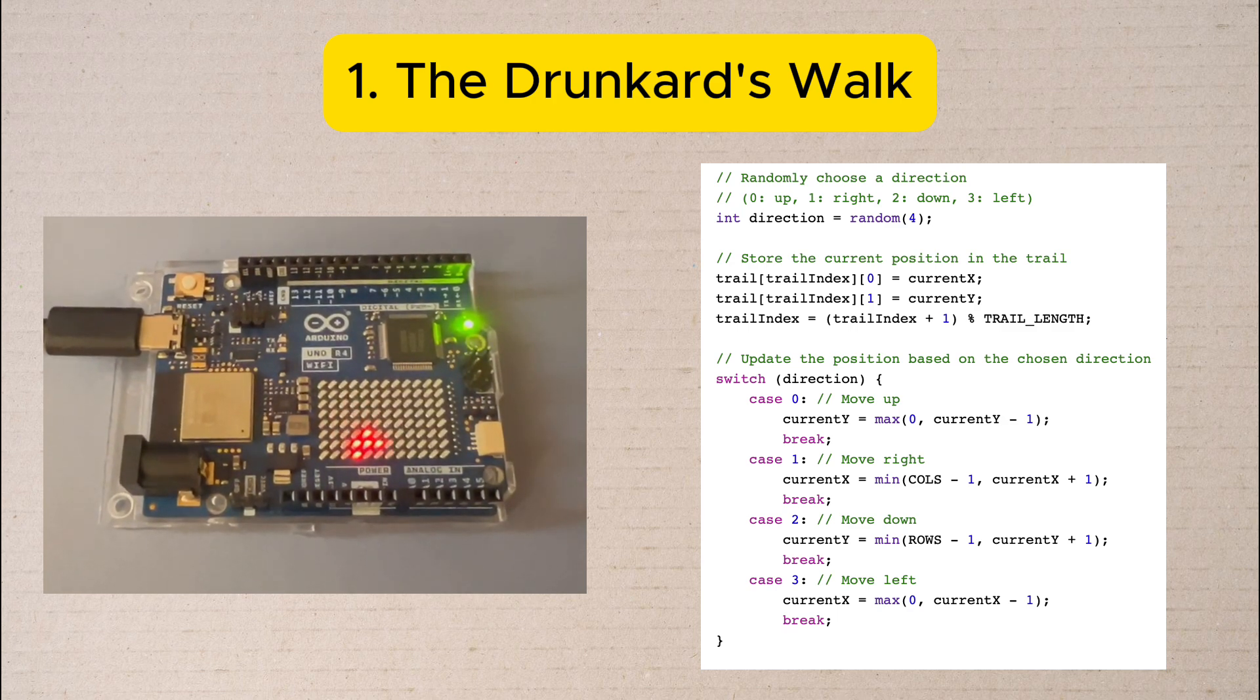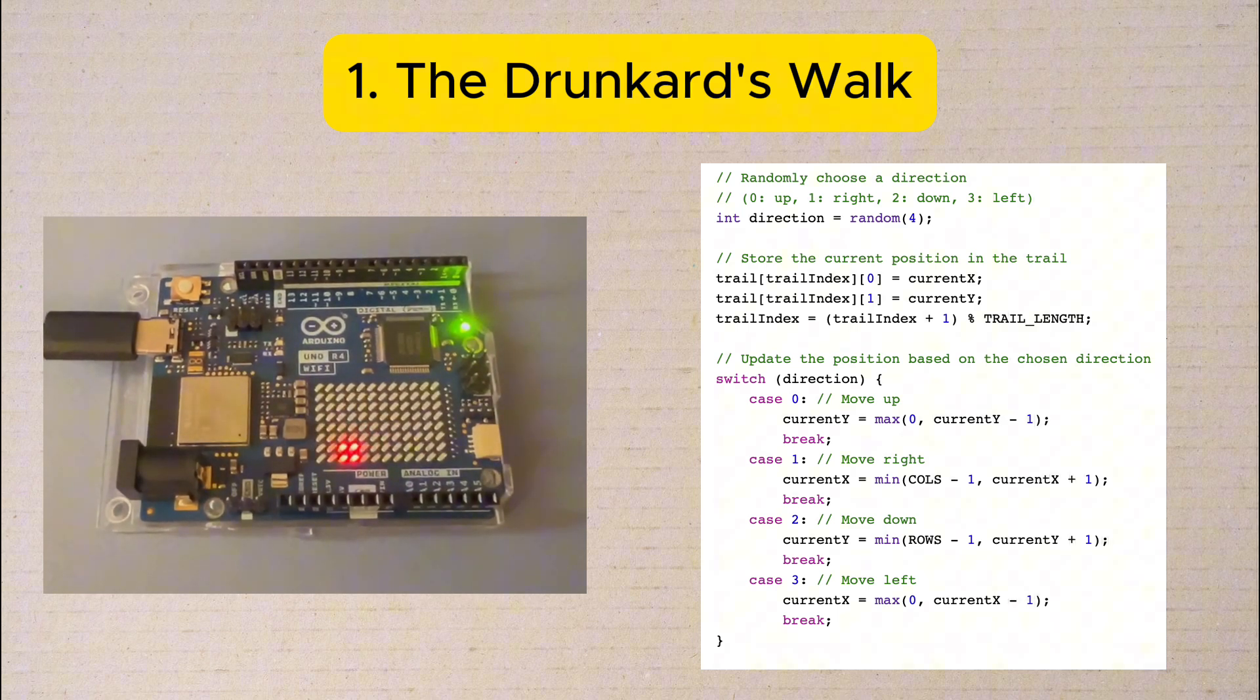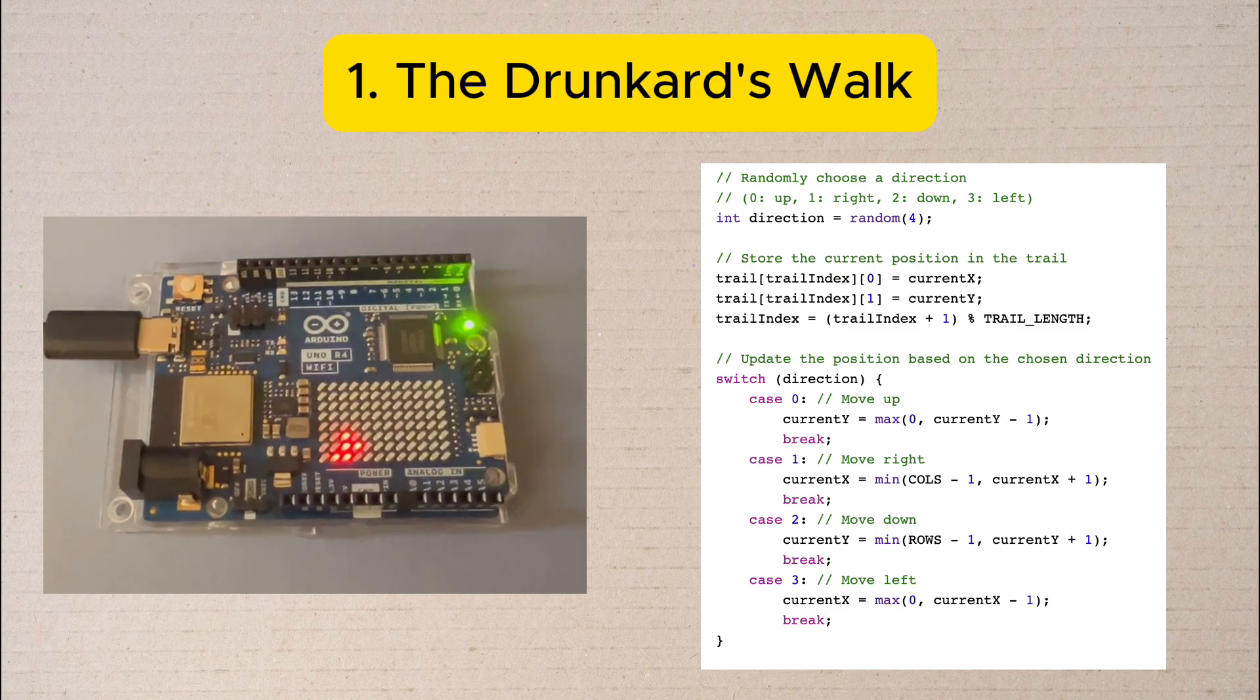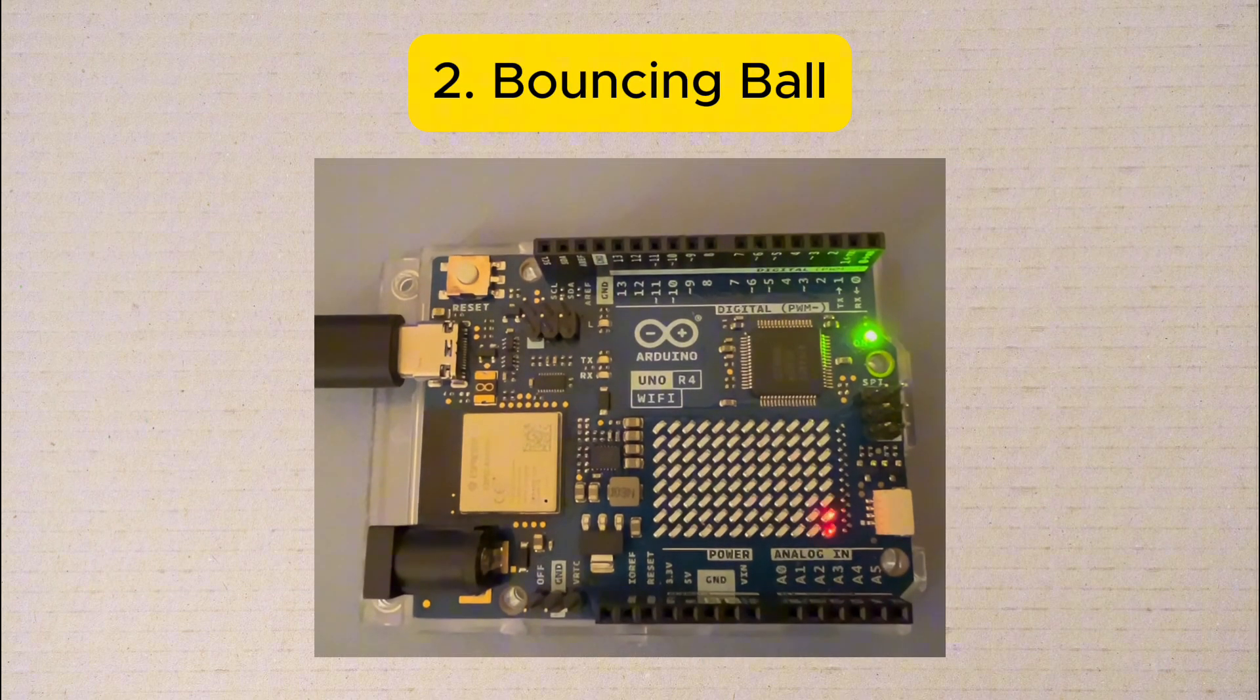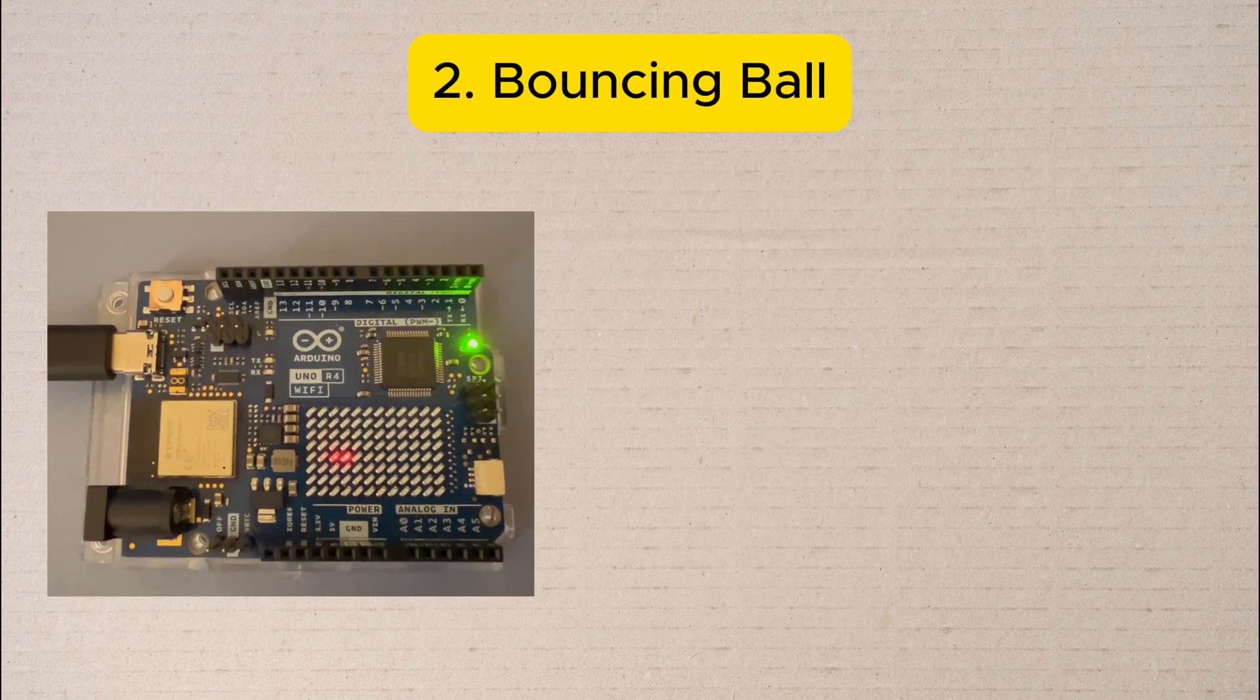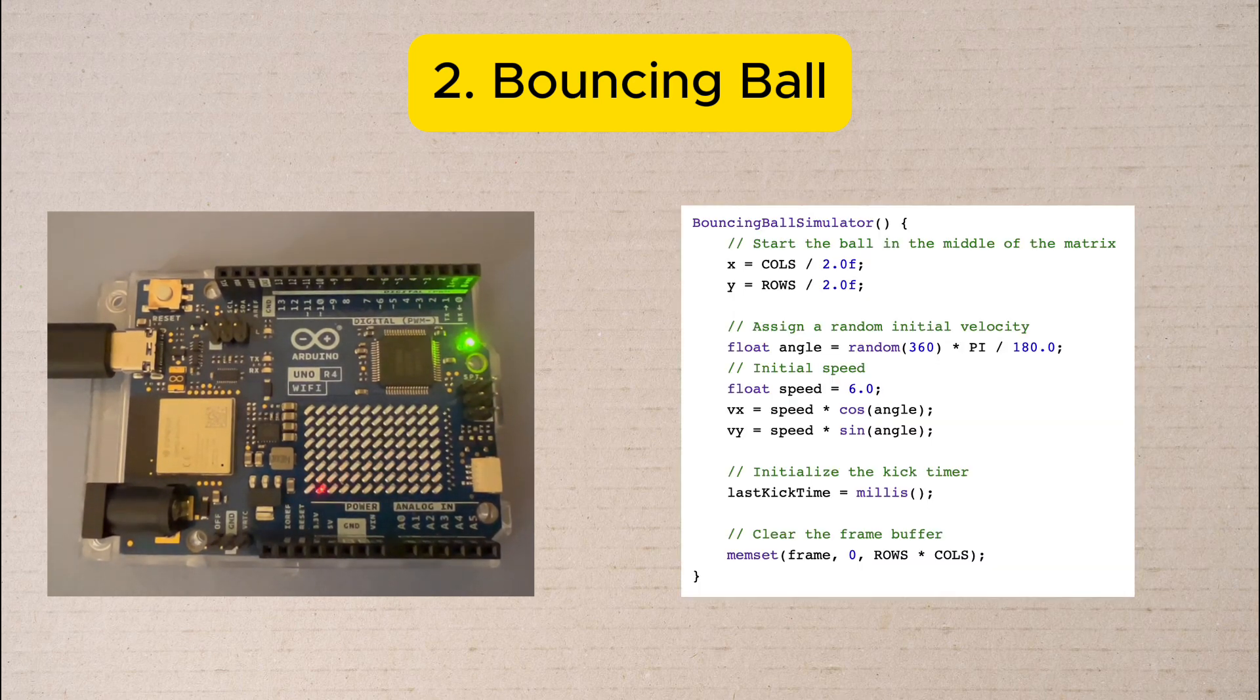The current position is always lit up while the trail shows where we've been. Number two: Bouncing Ball. To create this effect we start the ball from the center of the LED matrix with a random velocity vector.